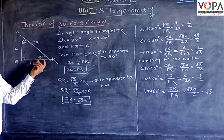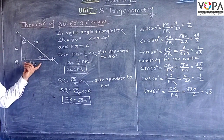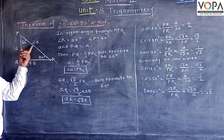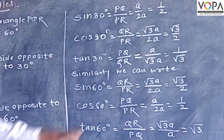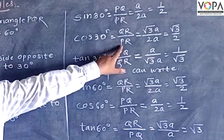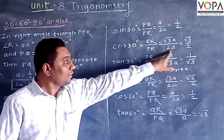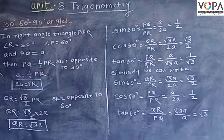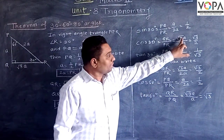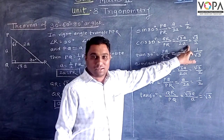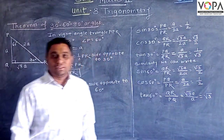In a similar way, cos 30 degree — we know the cosine ratio is the adjacent side upon hypotenuse. So therefore cos 30 degree is equal to QR upon PR. The value of QR is √3a and the value of PR is 2a. So when we put it in, the a's get cancelled and the value is √3 by 2.